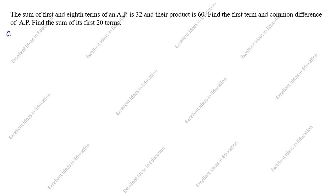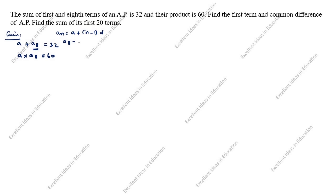What is given in this question? The sum of the first and eighth term is given, so A plus A8 equals 32. Note that the first term means A1 or A — they are the same. Next, the product is 60 means A into A8 is equal to 60. Using the nth term formula, An = A + (n-1)D, we get A8 = A + (8-1)D = A + 7D.